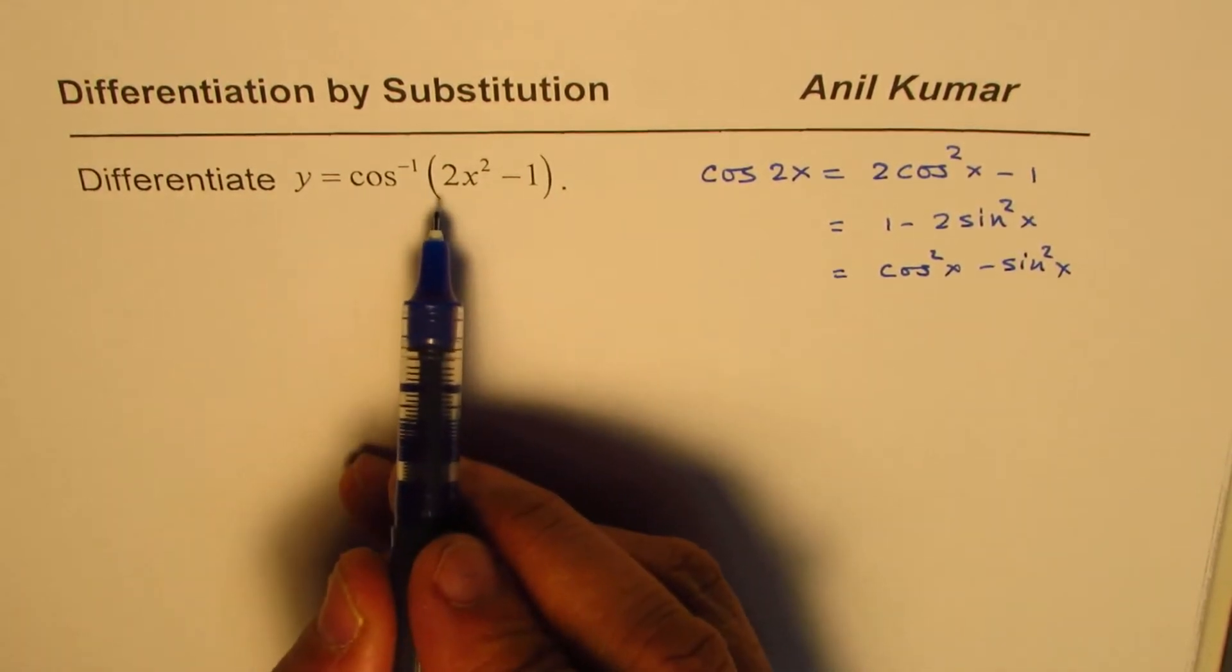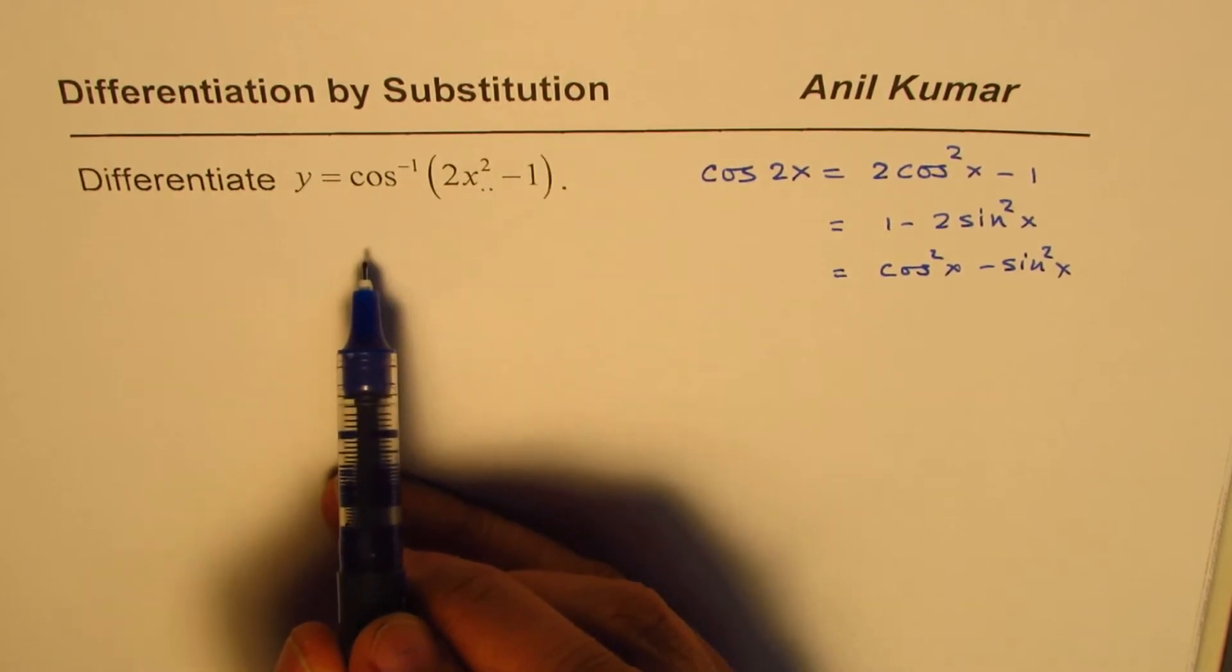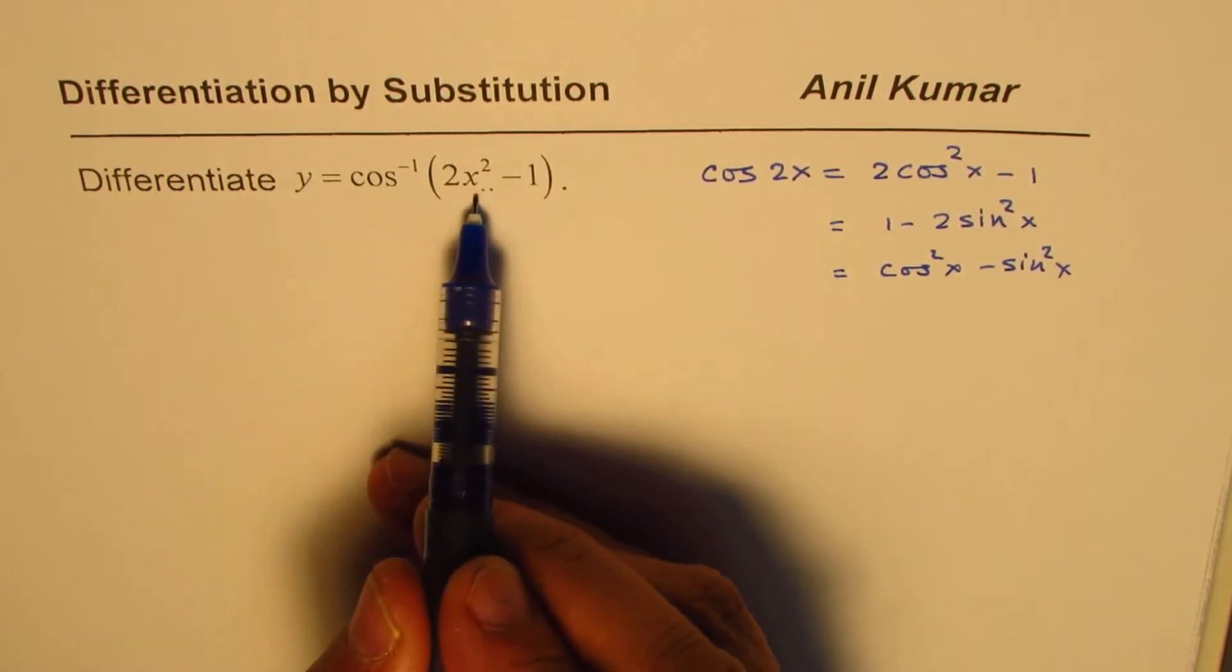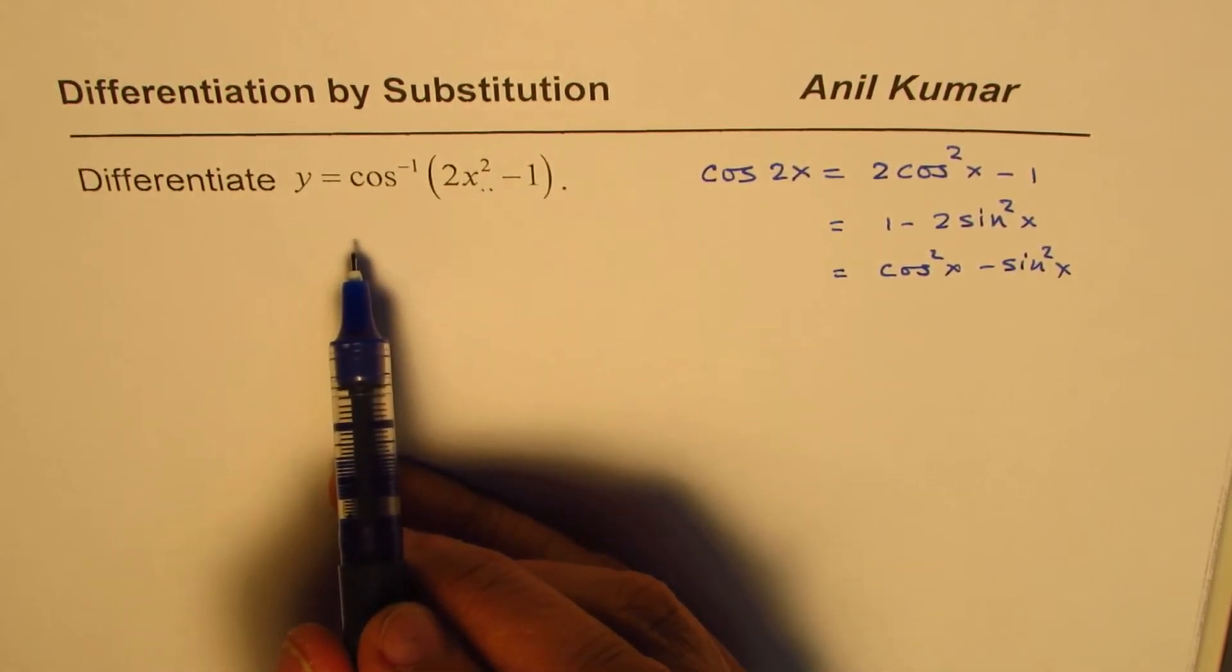Now, here you realize that our strategy is to get cos function inside this bracket. Then cos inverse of cos will just give us the angle and we will be able to differentiate it easily.